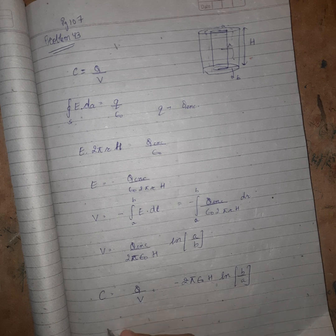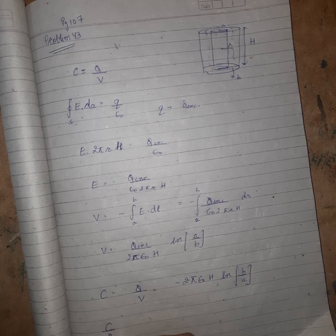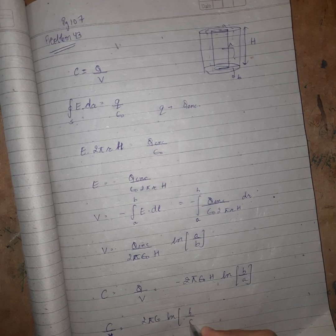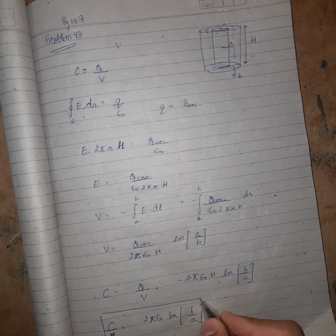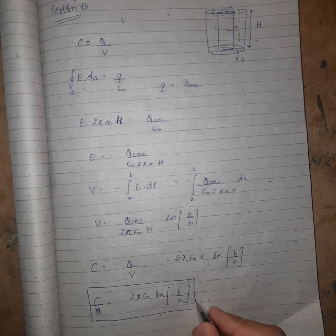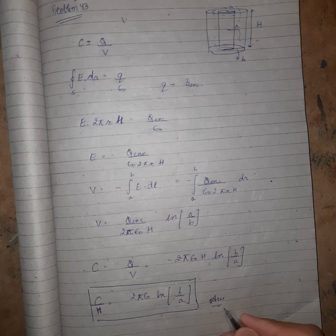So length is h here. Capacitance per unit length is 2πε₀ upon ln(b/a). So this will be the answer for this question. So that's all for this video.